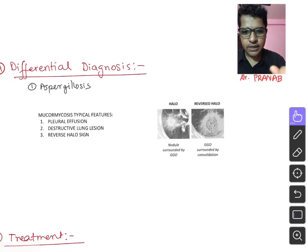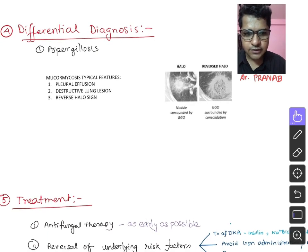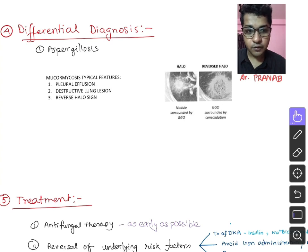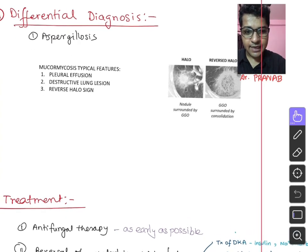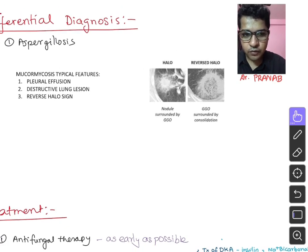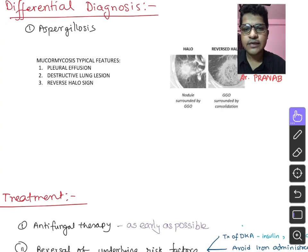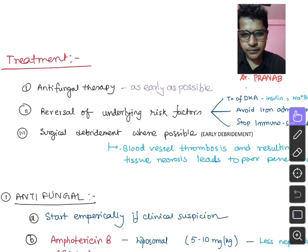Pulmonary aspergillosis is the most important differential diagnosis — both diagnostically and therapeutically — because treatments for mucormycosis and aspergillosis differ significantly. On imaging, mucormycosis shows pleural effusion, destructive lung lesions, and the reverse halo sign, while aspergillosis shows the halo sign. Differentiating pulmonary aspergillosis from mucormycosis is therefore very important before initiating treatment.